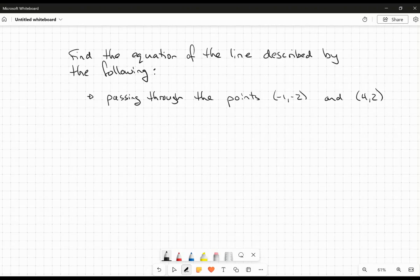Now, I prefer, personally, that students use the point-slope form of the equation. So it would be y minus y1 is equal to slope times x minus x1.